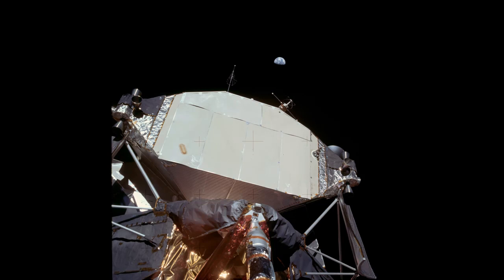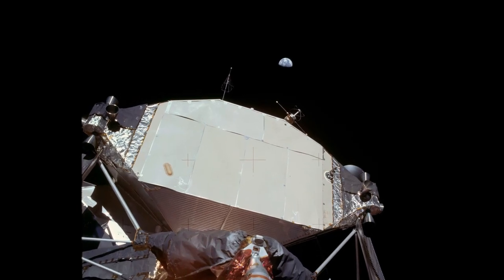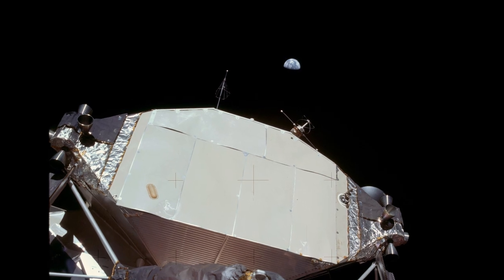our eyes and our cameras cannot see something as faint as a star. So the Apollo photographs do show the Earth in the sky, but from the surface of the moon, no stars.